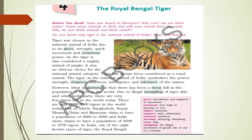There are only 5,000 to 7,000 tigers in the entire world today. Out of these, Bangladesh, Nepal, Bhutan, China, and Myanmar claim to have a population of 3,000 to 4,500, while India alone claims to have a population of 2,500 to 3,750 tigers.